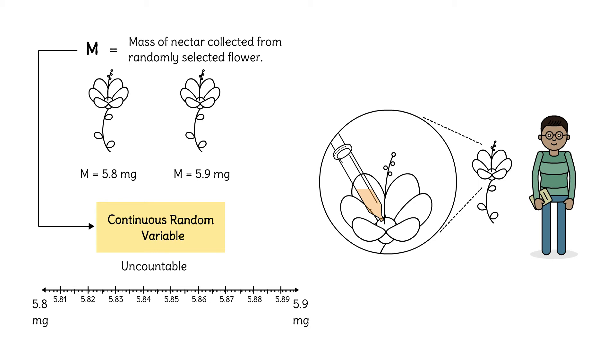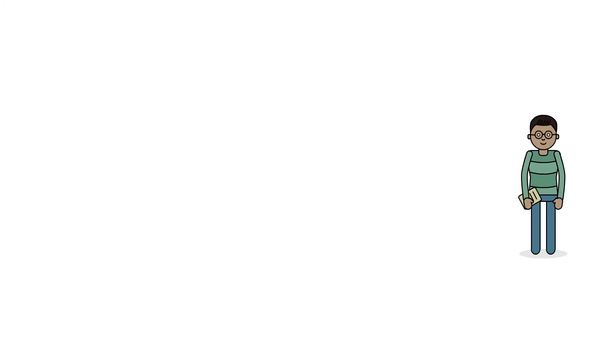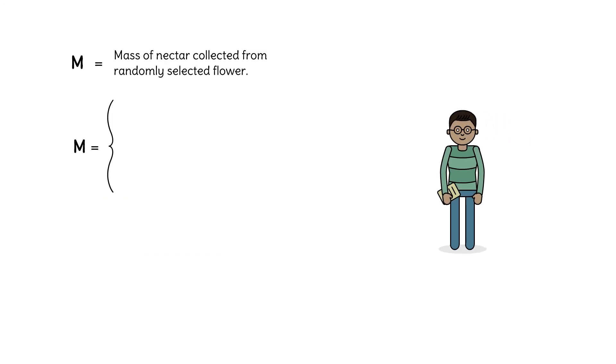But remember, Booker is the scientist in charge. If he prefers to work with a discrete random variable, he can make it happen. He decides to keep it simple. Flowers with less than 5 grams of nectar get a score of 0. Those with nectar greater than or equal to 5 grams get a score of 1. Booker creates a discrete random variable to help simplify his research.